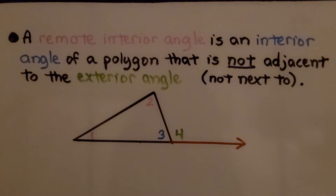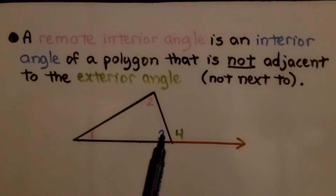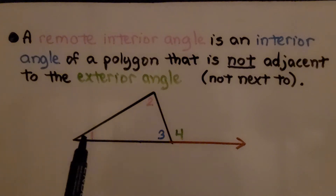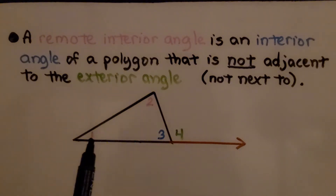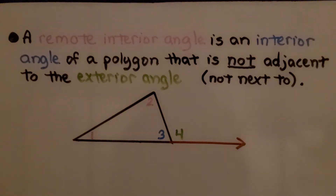A remote interior angle is an interior angle of a polygon that is not adjacent to the exterior angle — so it's not next to this exterior angle. This one is adjacent, so that doesn't count; that's not a remote interior angle. These are not next to this exterior angle. Angle one and two are remote interior angles.